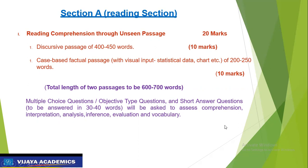In these unseen passages, the kinds of questions that will be there are: Multiple Choice Questions, objective type questions, and short answer questions. Here you are going to write the answer in 30 to 40 words.